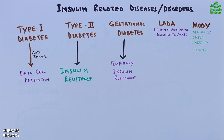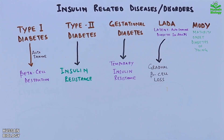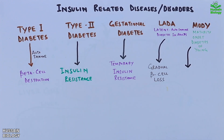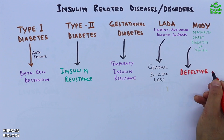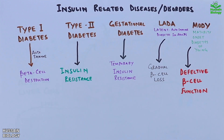Gestational diabetes can increase the risk of developing type 2 diabetes later. LADA, latent autoimmune diabetes in adults, involves a gradual loss of beta cells over time and is often misdiagnosed as type 2 diabetes because of its slower onset. MODY, maturity onset diabetes of the young, is due to defective beta cell function, typically appears in younger individuals, and often has a genetic link.